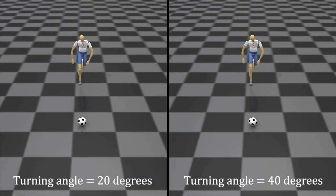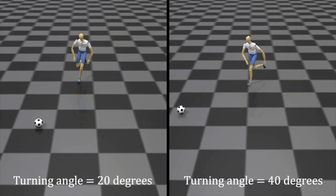Dribbling to the side with different turning angles. When changing direction, the character leans toward the given turning angle.